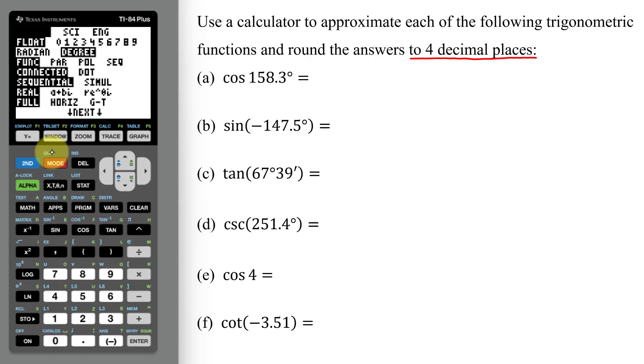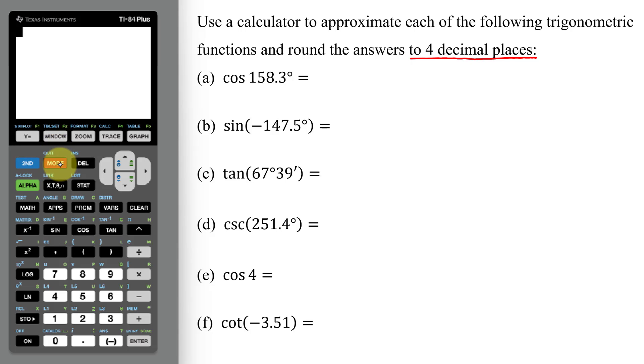So now I need to quit, which is in blue, so I just hit second mode. That brings me back to the home screen. Now I just need to type this in. So I have cosine. Notice this calculator opens a parenthesis when you hit any of the trig functions. Now I put in 158.3. I don't need the degree symbol since I know my calculator's in degrees.